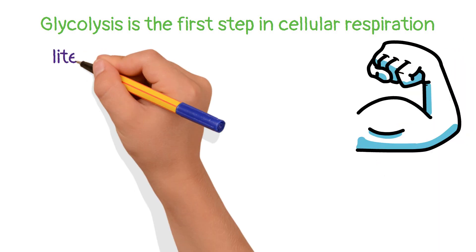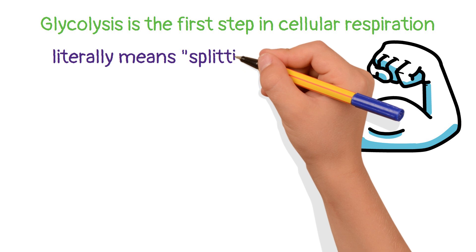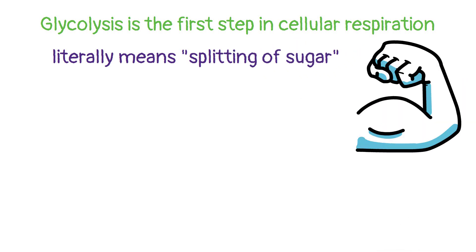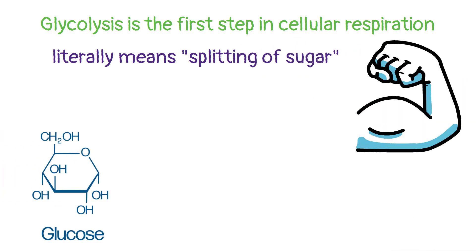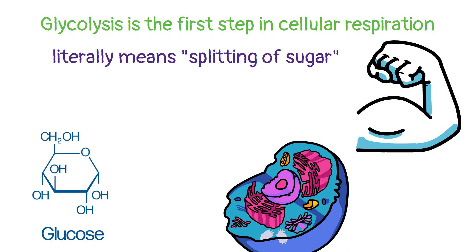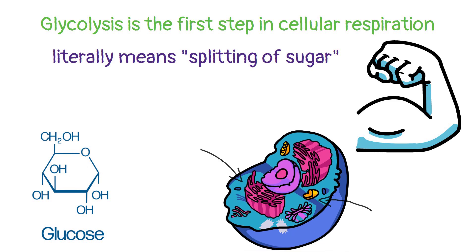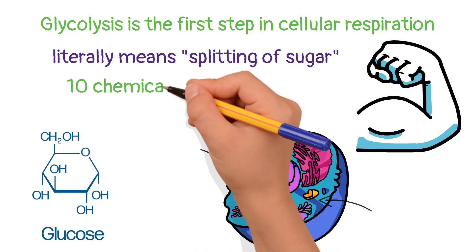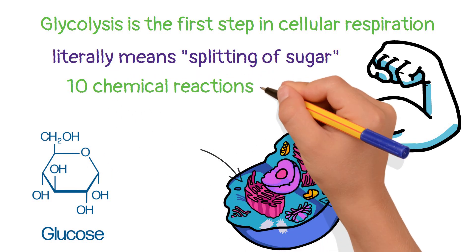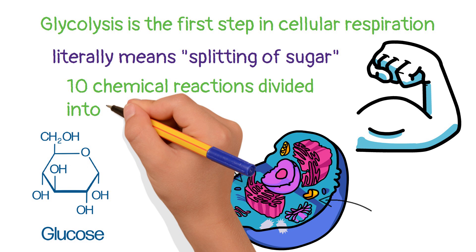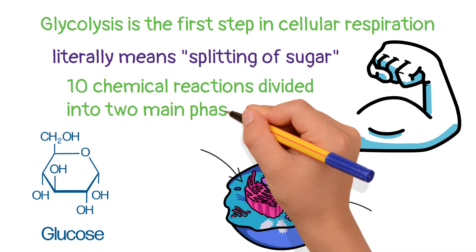Glycolysis literally means splitting of sugar — in this case, our sugar is glucose. The process takes place in the cytoplasm of the cell and consists of a series of 10 chemical reactions that are divided into two main phases.